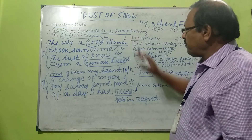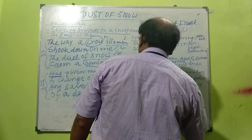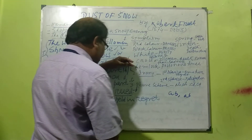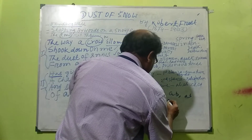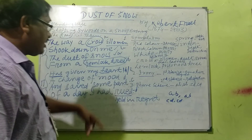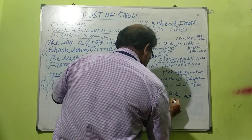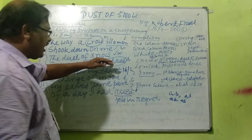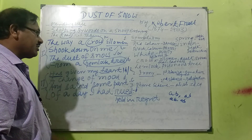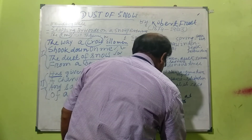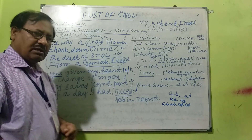For exam purposes, if only one stanza is given, write the rhyme scheme starting fresh as ABAB for whichever stanza appears. If only the second stanza comes, write ABAB. If the whole poem is asked, write ABAB CDCD. That's the basic rule. Okay, thank you.